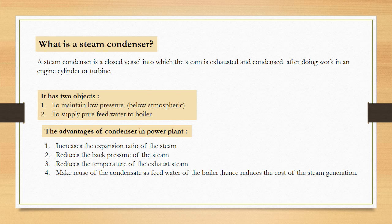Now we will see the advantages of condenser in power plant. It increases the expansion ratio of the steam, reduces the back pressure of the steam, reduces the temperature of the exhaust steam. And fourth one is make reuse of condensate as feed water to the boiler, hence reduces the cost of the steam generation.